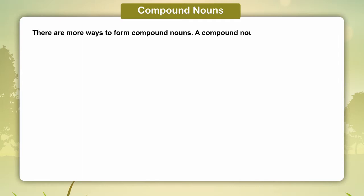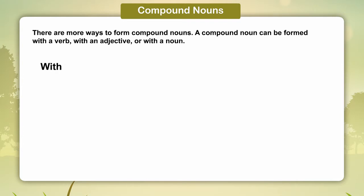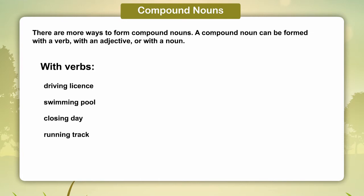A compound noun can be formed with a verb, with an adjective, with a noun, or with verbs. Examples with verbs: driving license, swimming pool, closing day, running track, sleeping berth.